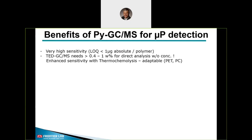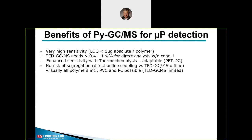We have an enhanced sensitivity with thermochemolysis, so we can say we have an adaptable sensitivity. If we look at PET or polycarbonate, we can use TMAH for derivatization. We don't have a risk of segregation because we have a direct online coupling versus TET GCMS's offline coupling. Virtually all polymers including PVC and polycarbonate are possible. The microplastic identification and quantification software tool is in preparation, and we are aiming to have a 30-second ID tool available.